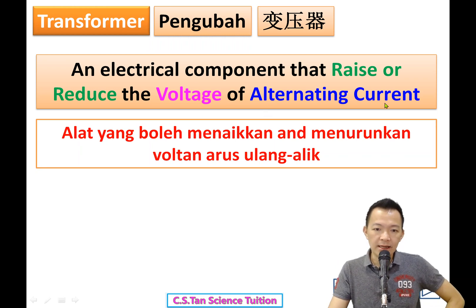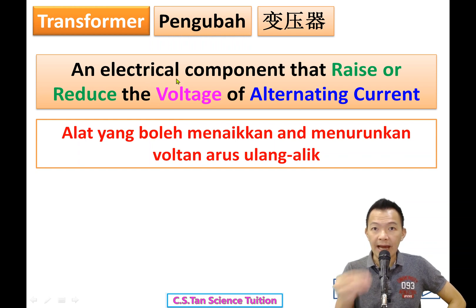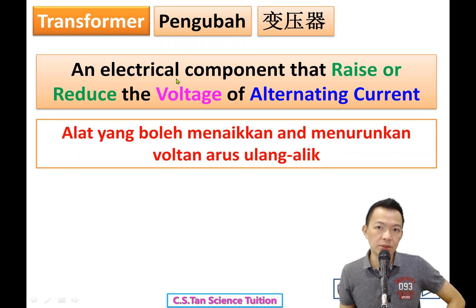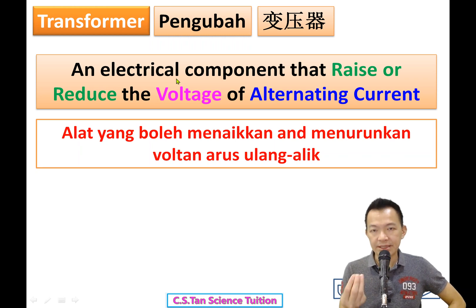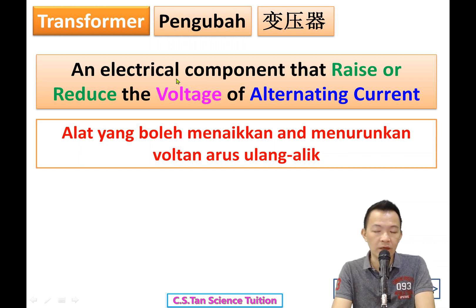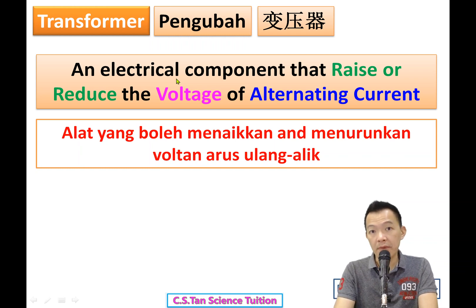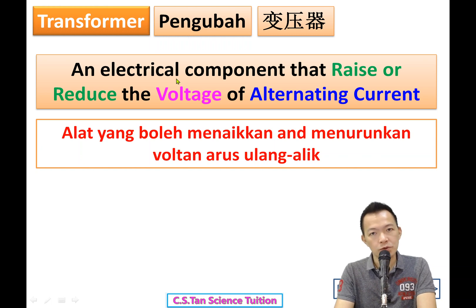Only alternating current voltage can be changed. For direct current, like a battery, you cannot change the voltage. If you buy a 1.5V battery, you cannot make it become 150V — if you could, all battery factories would close tomorrow.